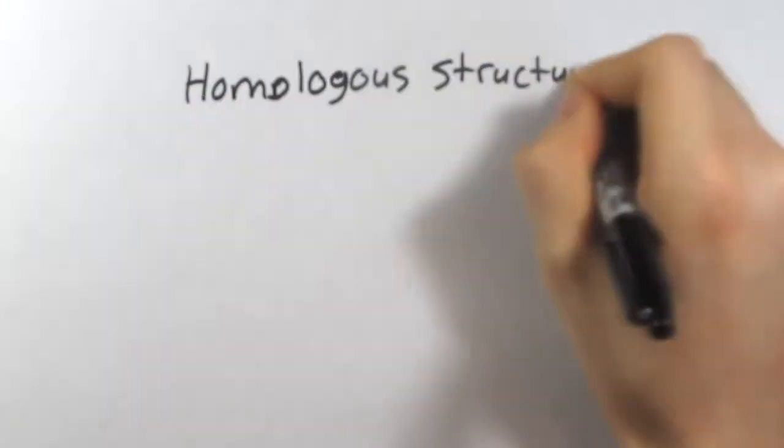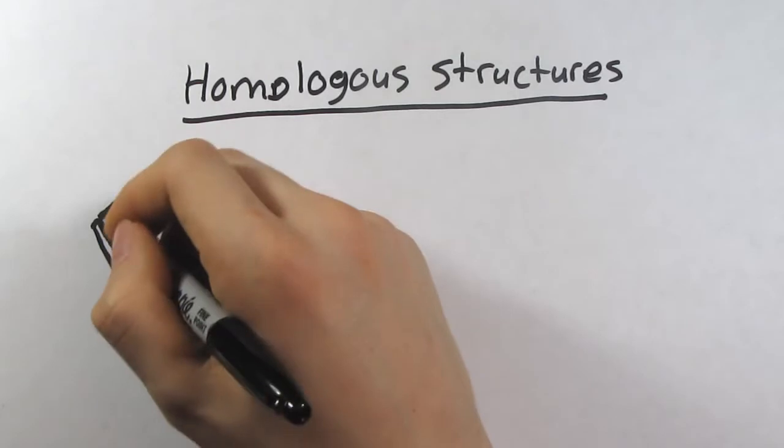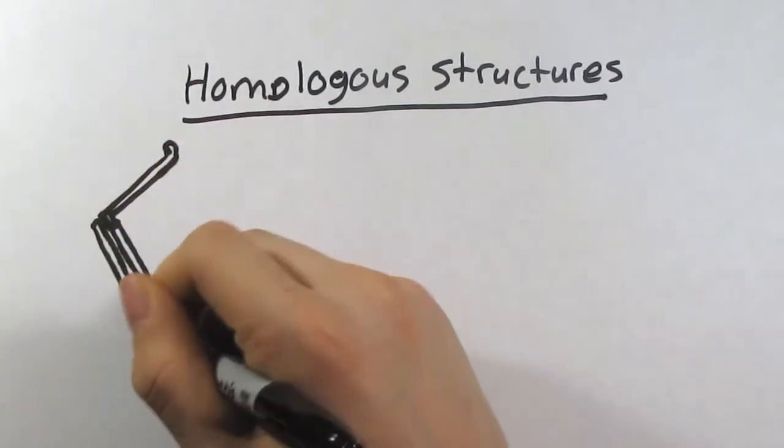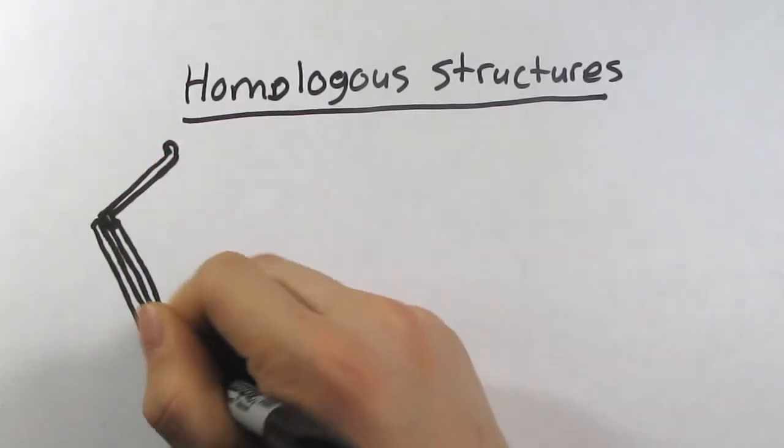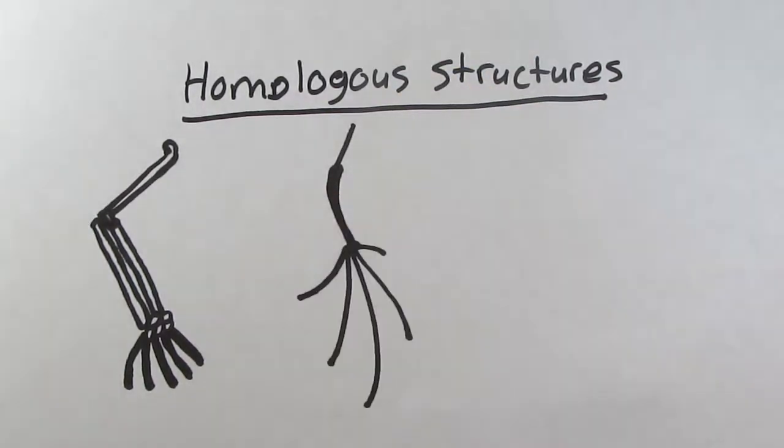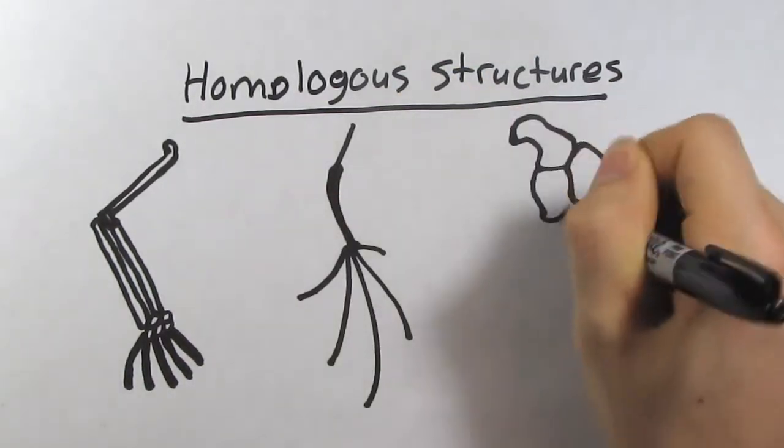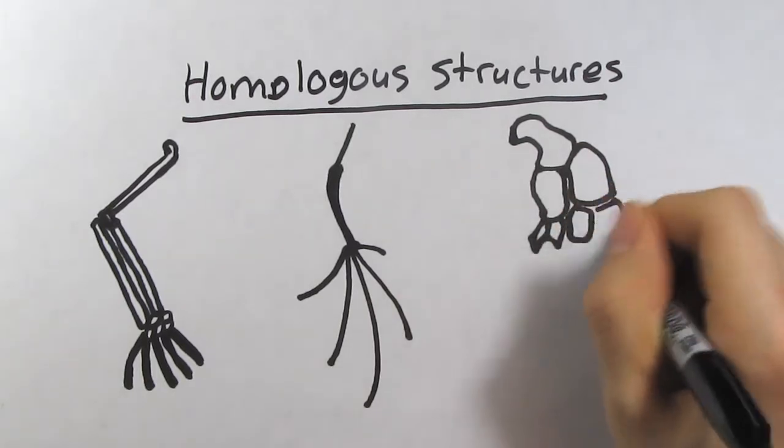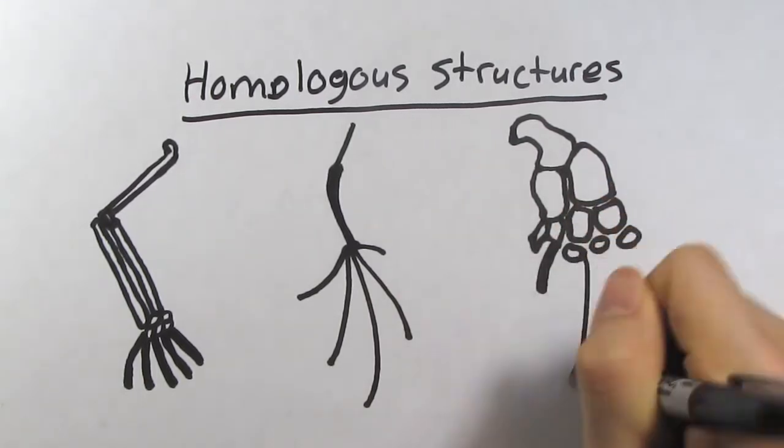Next up are homologous structures. The fact that so many organisms share so many finely detailed structures shows us that we are all related. Inside our limbs, we all have the very same structure. One longish bone on top connected by two thin bones of the joint, followed by a cluster of small bones, called the carpals, and then our fingers, or digits.